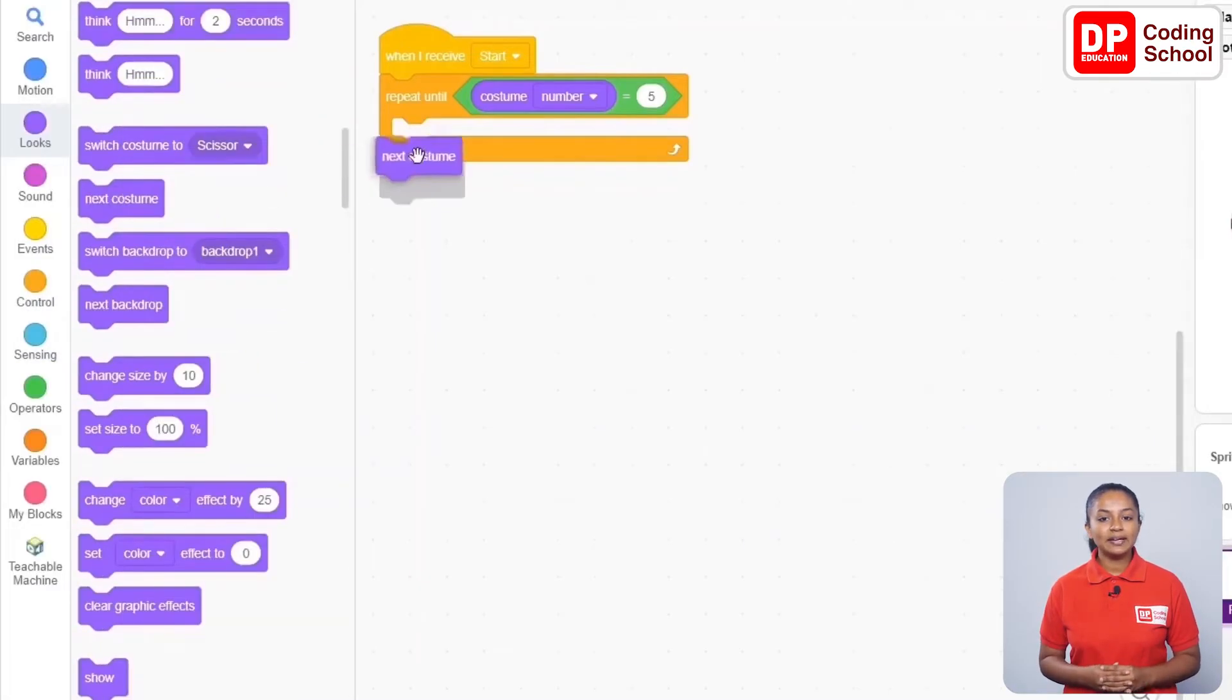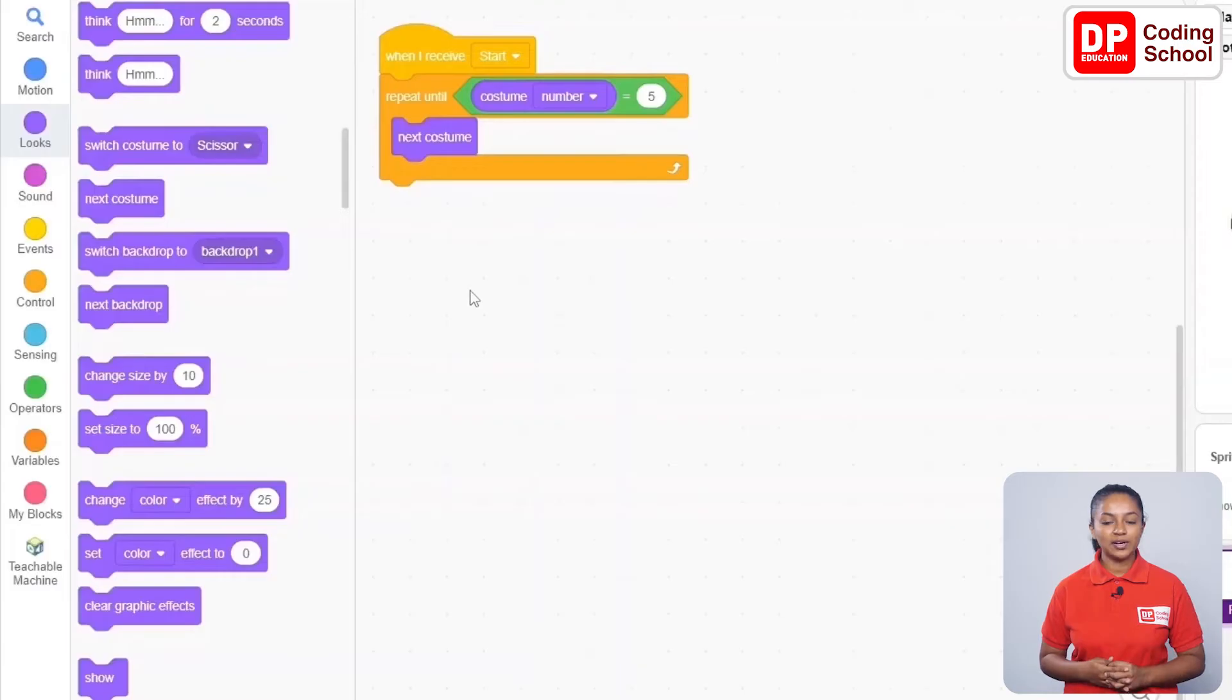This code block will repeat until the costume number is not equal to 5. Next is to create the code to change the costumes of the player sprite in cases where the value of the player variable is rock, paper, or scissors.